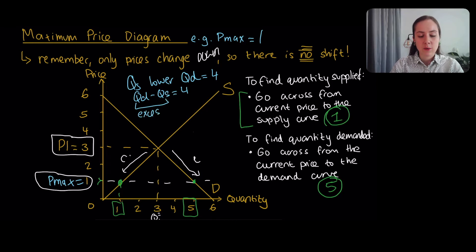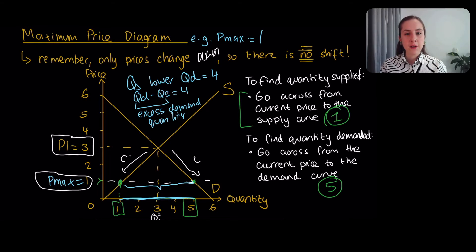This is what we call the excess demand quantity. Some people like to label the excess demand quantity, which is 4, as this bit here. Or some people draw some brackets and they just label that as the excess demand. So long as it's a quantity and not an area, then that represents the excess quantity that is demanded.